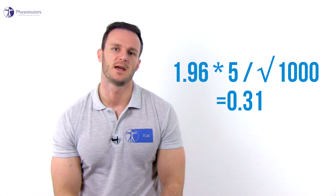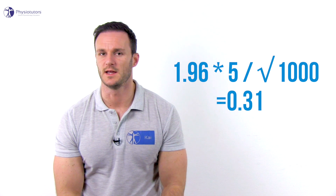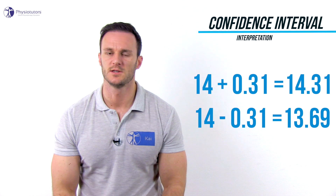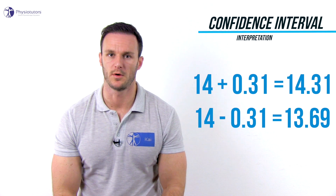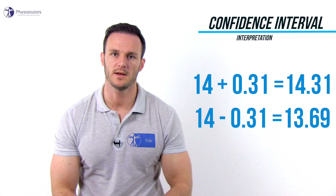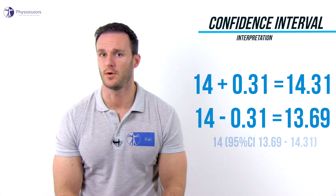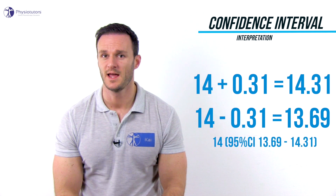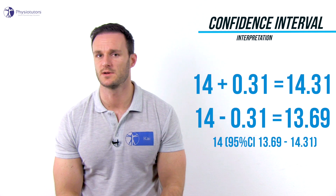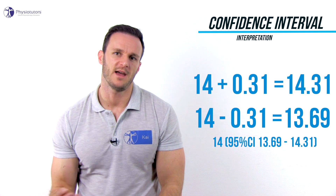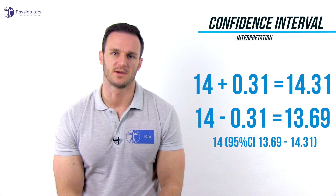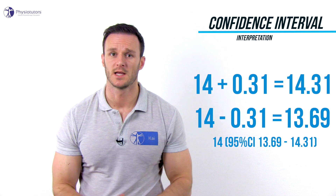This means that if we were to conduct the study a hundred times, we will get a result that falls within 14 plus 0.31 (so 14.31) and 14 minus 0.31 (so 13.69) in 95 out of 100 cases. In 5 out of 100 cases, we will find a result that falls outside the confidence interval.